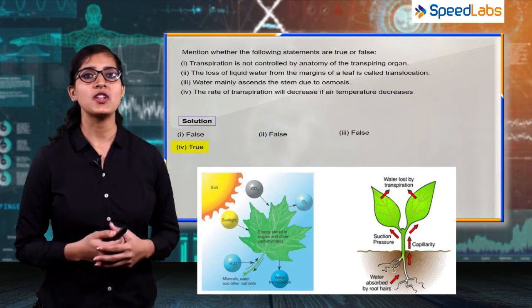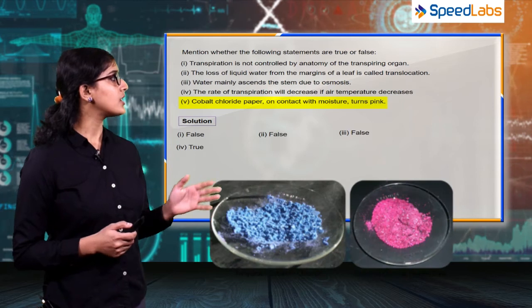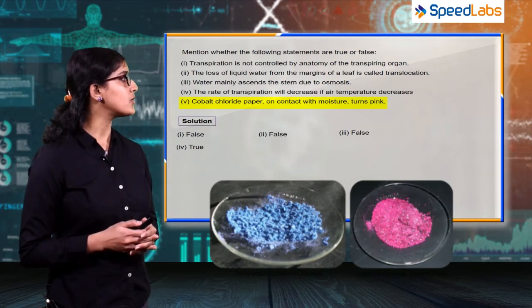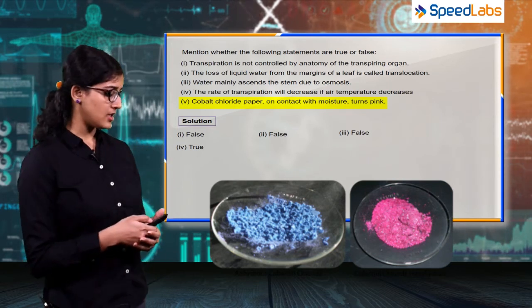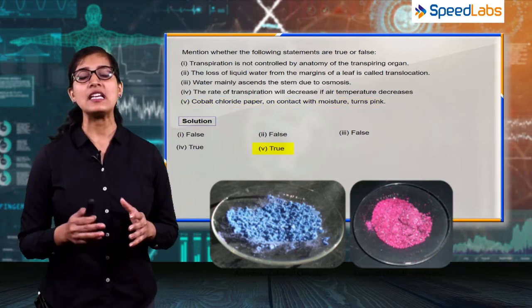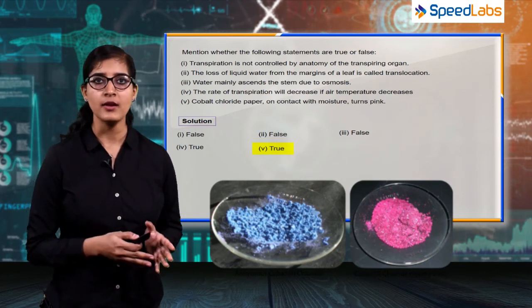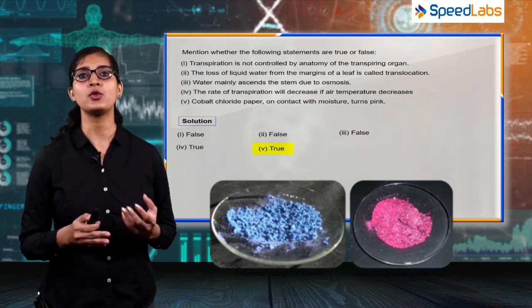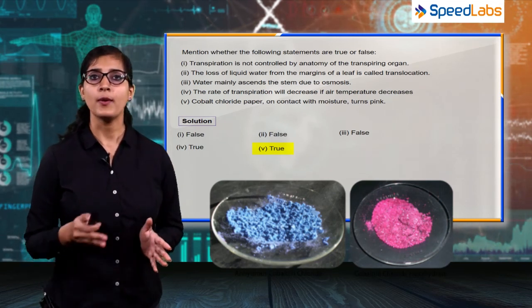The next statement is cobalt chloride paper on contact with moisture turns pink. As you know that this statement is true because anhydrous cobalt chloride paper is blue in color and as this paper absorbs moisture it will turn its color from blue to pink.